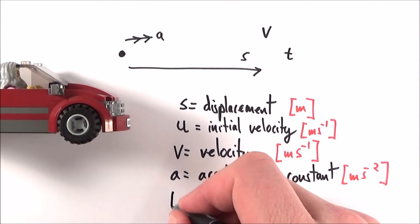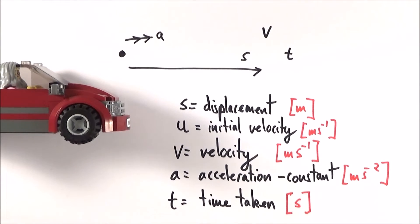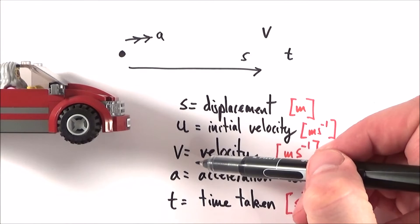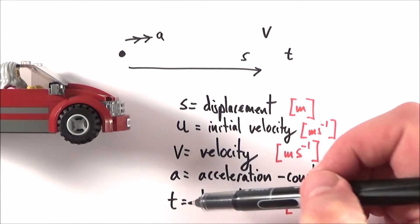Finally, we have the time. So we have five constants: displacement, initial velocity, final velocity, acceleration, and time.